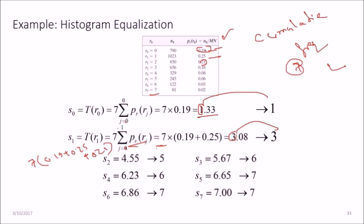Now 4.55, see 1.33 we took as 1. 4.5 because it is nearer to 5 we take it as 5. 6.23 we take it as 6. 6.86 nearer to 7. Then we have 5.67 goes to 6, 6.65 goes to 7, 6.86 goes to 7, and 7.00 goes to 7.